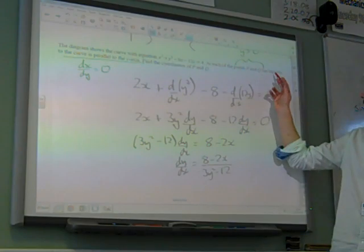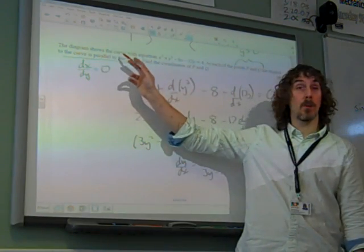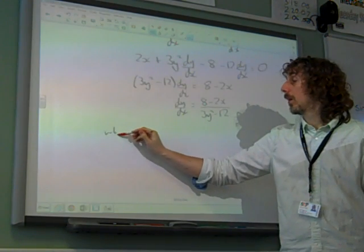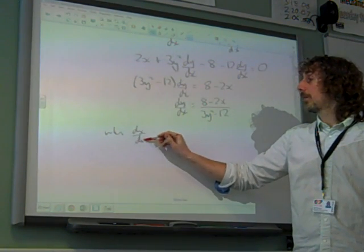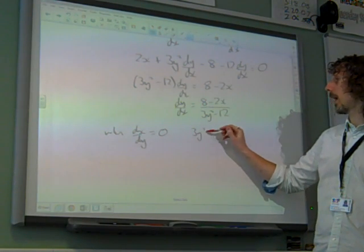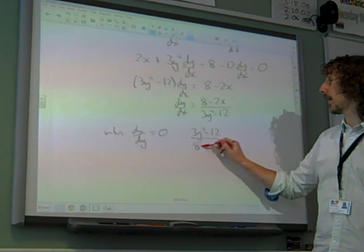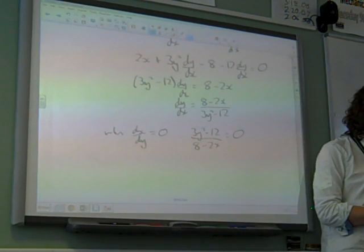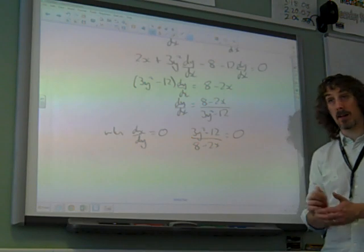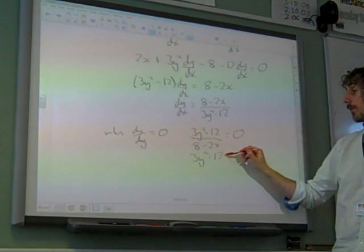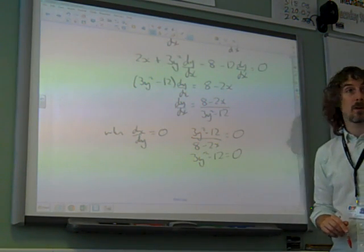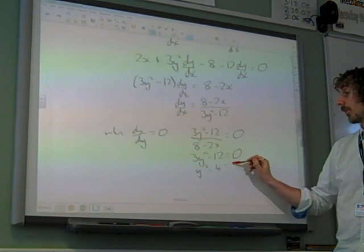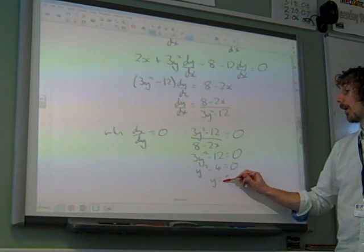Remember what the question said, the tangent of the curve is parallel to the y-axis, that means dx/dy equals 0. If dx/dy equals 0, that means 3y squared minus 12 over 8 minus 2x equals 0. We don't care about the bottom line of that, all we care about is 3y squared minus 12 being 0. Which we can solve quite nicely, that's y squared minus 4. So it gives us y is plus or minus 2.